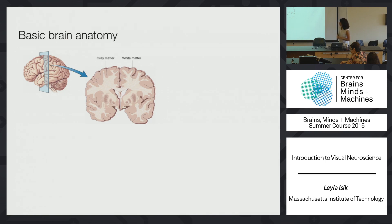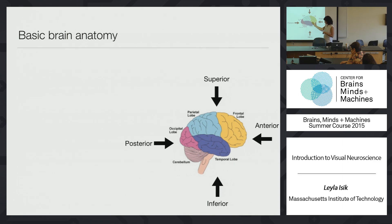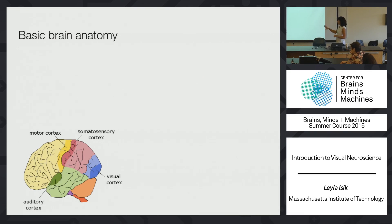Some basic brain anatomy: this is a slice of the cortex. There are different lobes — the occipital lobe is in the back, that's where early visual cortex is; the temporal lobe, parietal lobe, and frontal lobe. If people are talking about the inferior part of the brain, they mean the bottom; superior means top. This is a rough layout of where different sensory and motor cortices land on the cortex. Nancy is going to give a nice introduction to the functional specialization of the brain; these are just basic anatomical terms.